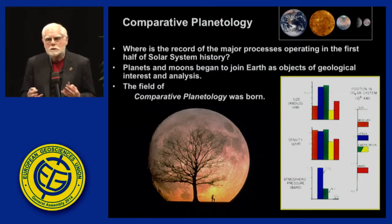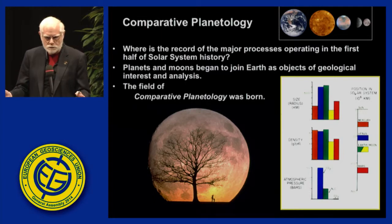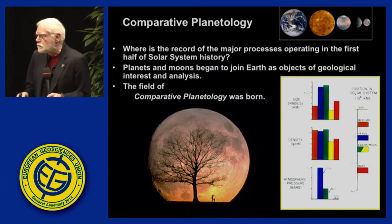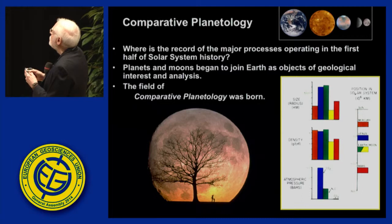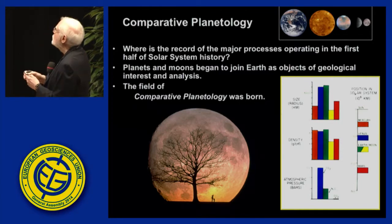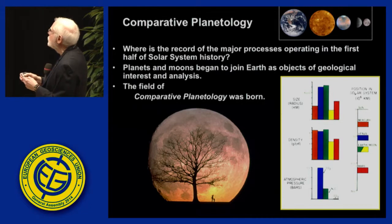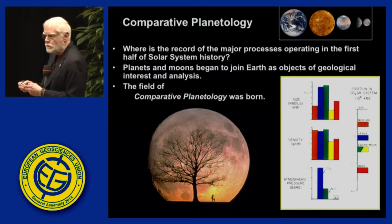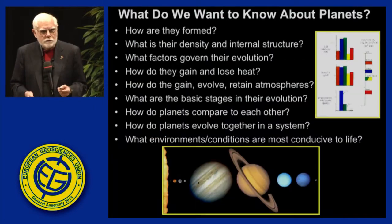Where is the record of the major processes operating in the first half of solar system history? Planets and moons were soon to become objects of geological interest and analysis — previously they'd been astronomical objects. The field of comparative planetology was born. What happens with planets as a function of distance from the sun, in terms of initial starting conditions and incident solar radiation? Why do planets differ in size, and why is Mercury the same density as Venus and the Earth even though it's only a third of the diameter?